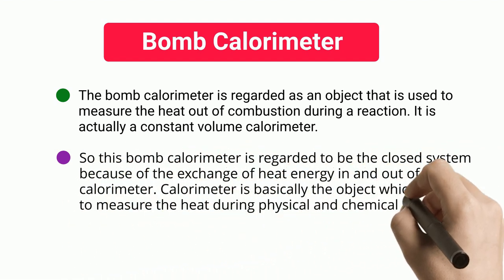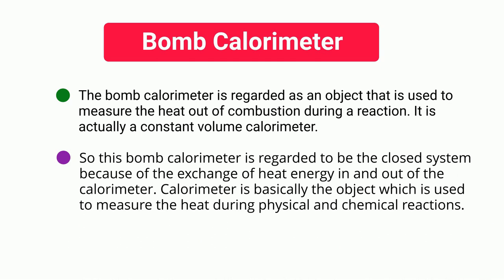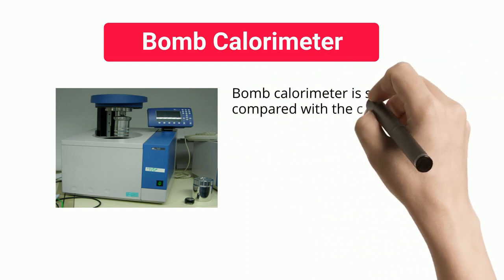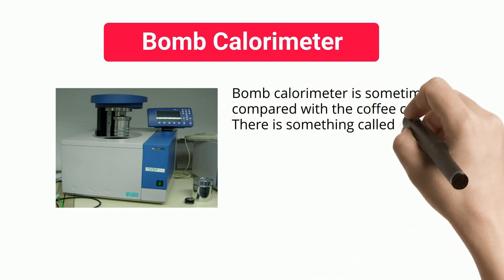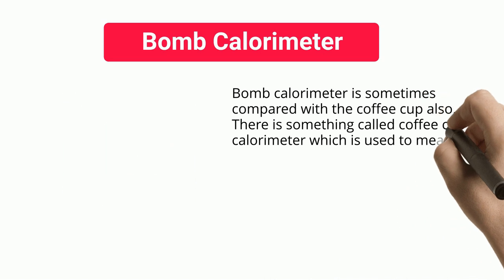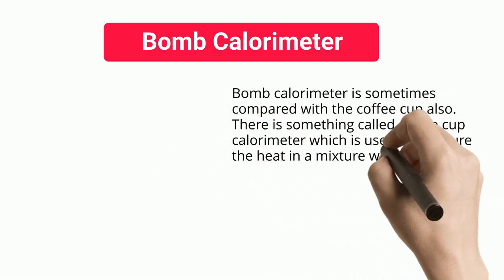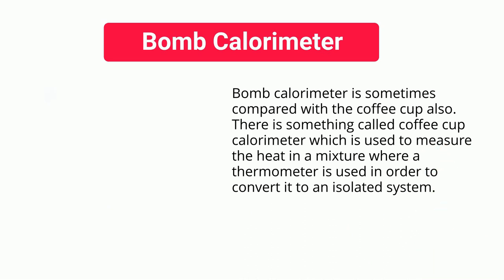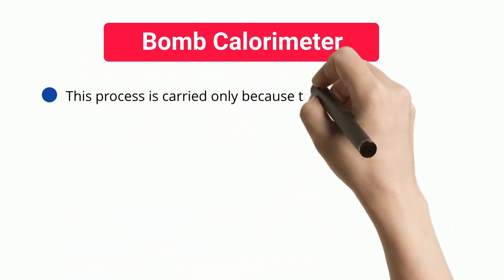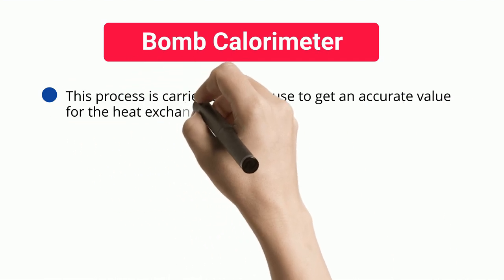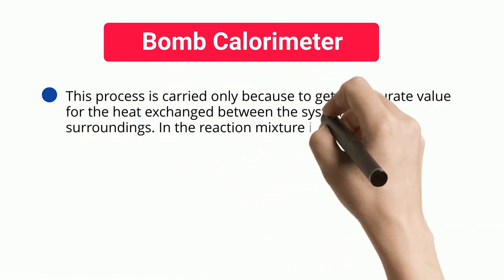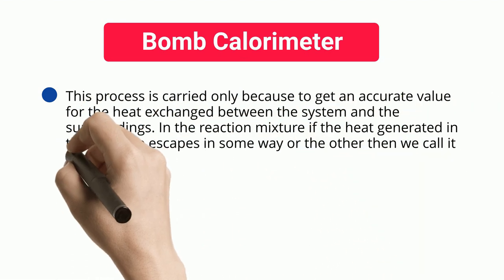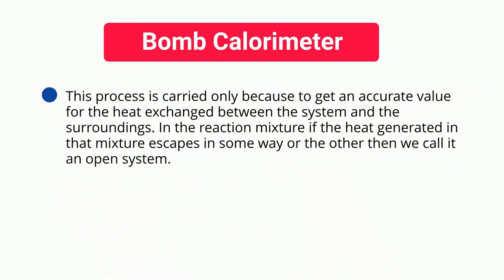A calorimeter is basically the object used to measure heat during physical and chemical reactions. The bomb calorimeter is sometimes compared with the coffee cup calorimeter, which is used to measure heat in a mixture where a thermometer is used in order to convert it to an isolated system. This process is carried out to get an accurate value for the heat exchanged between the system and the surroundings. If the heat generated in the reaction mixture escapes in some way, we call it an open system.